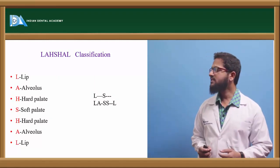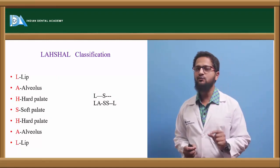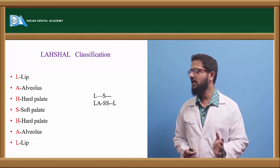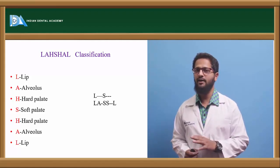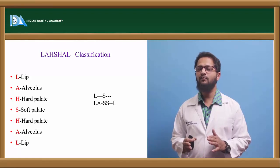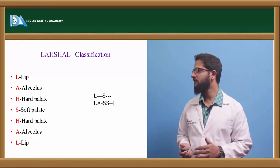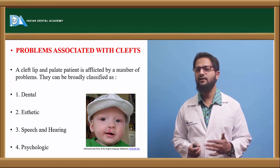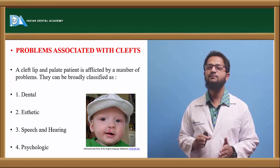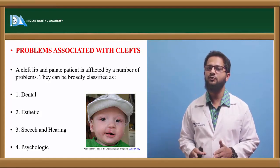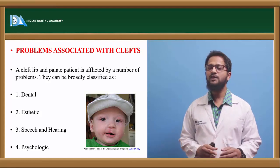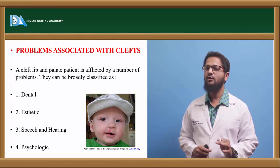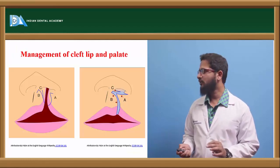Lauschul's classification: each letter stands for a particular part — L for lip, A for alveolars, H for hard palate, S for soft palate — and depending on the site of involvement, right side and left side are indicated. Now, children born with clefts usually suffer from dental problems, aesthetic problems, speech and hearing problems, and psychological problems.